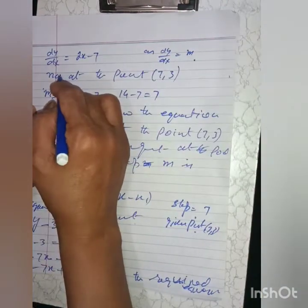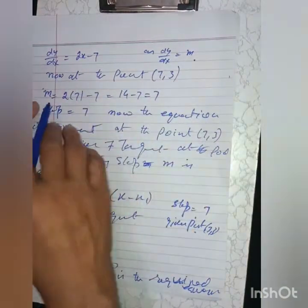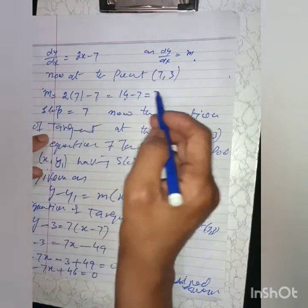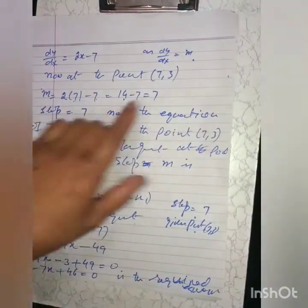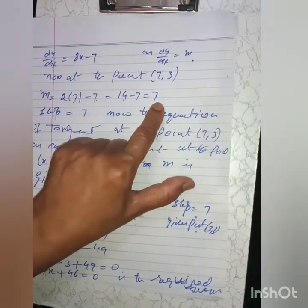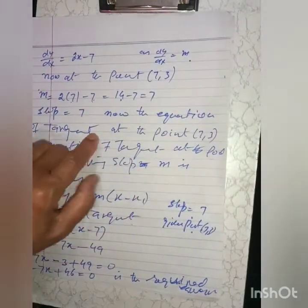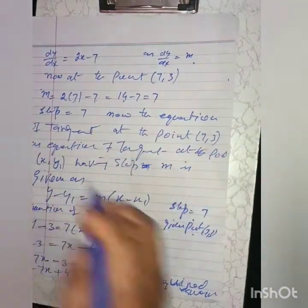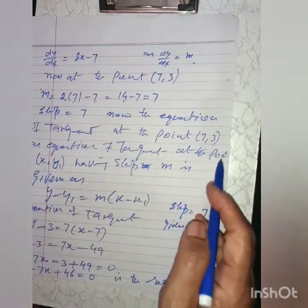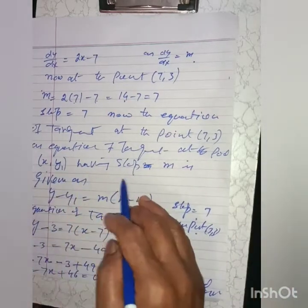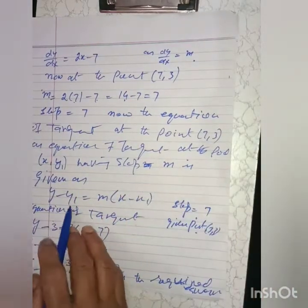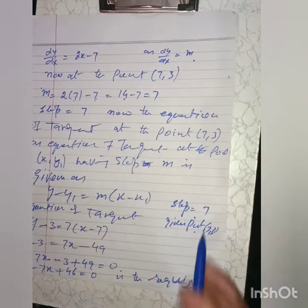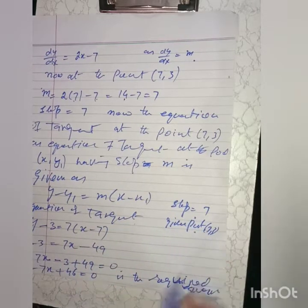At the point (7, 3), m = 2(7) - 7 = 14 - 7 = 7. So the value of the slope at the given point is 7. The equation of the tangent at point (x₁, y₁) with slope m is y - y₁ = m(x - x₁), where slope m = 7 and the given point is (7, 3).